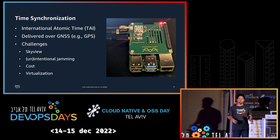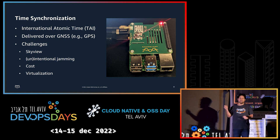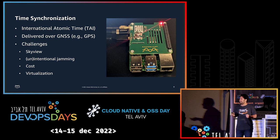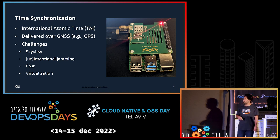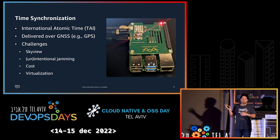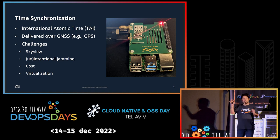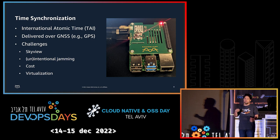A fun project is to build a GNSS receiver at home and get nanosecond-accurate time. This is mine — built with a Raspberry Pi, a hat, and an antenna from AliExpress. You might ask why we don't put that in every server. There are challenges: the antenna needs a sky view, there's intentional and unintentional jamming, cost, and virtualization makes it more difficult because we'd need to allow different VMs access to the hardware.